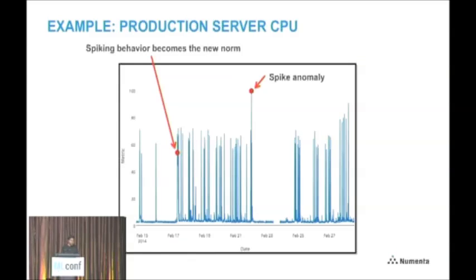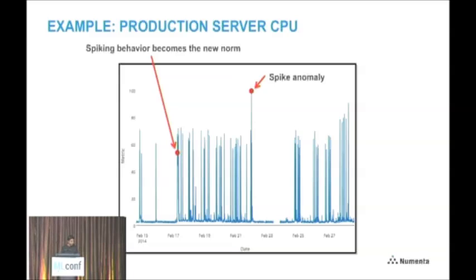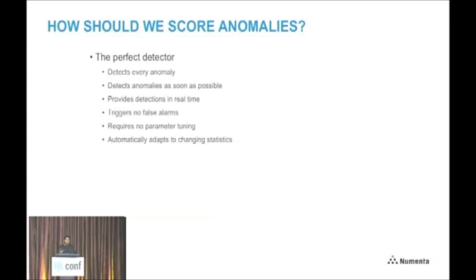Here's a third example looking at CPU usage on a production server. The pattern is extremely spiky, but in the beginning it was pretty low. Then it starts to spike — a new behavior that was an anomaly. But this behavior actually continues, perhaps because new software or a new service was installed. Even though there was an anomaly there, this behavior is now the new normal. So you don't want to keep giving false positives — you want to adapt to the new normal. And then again in the middle there's a spike anomaly.